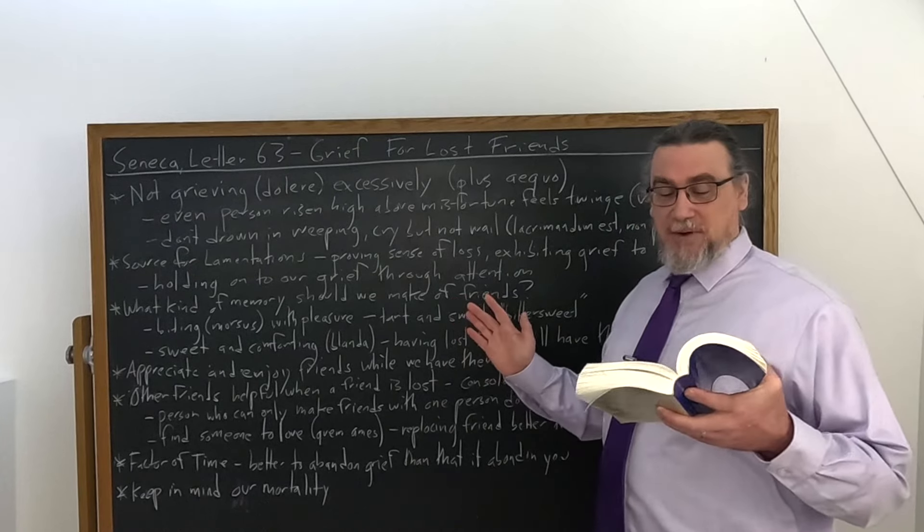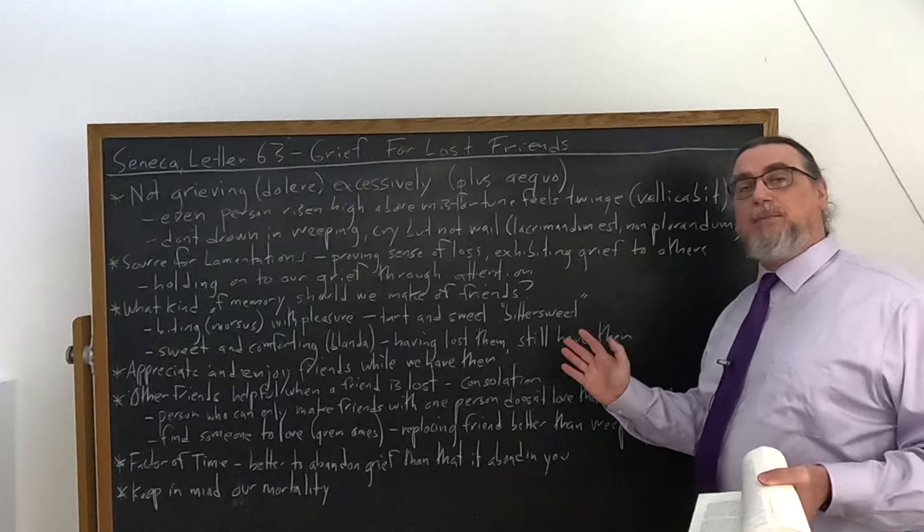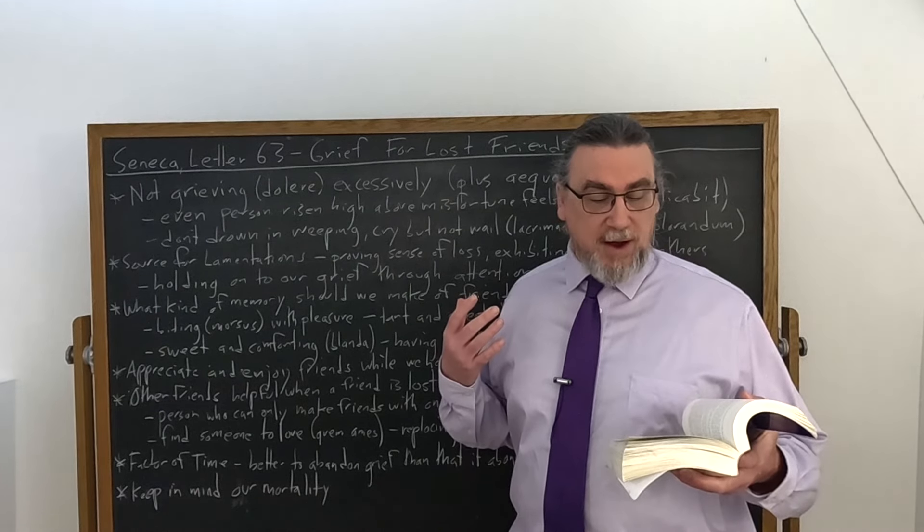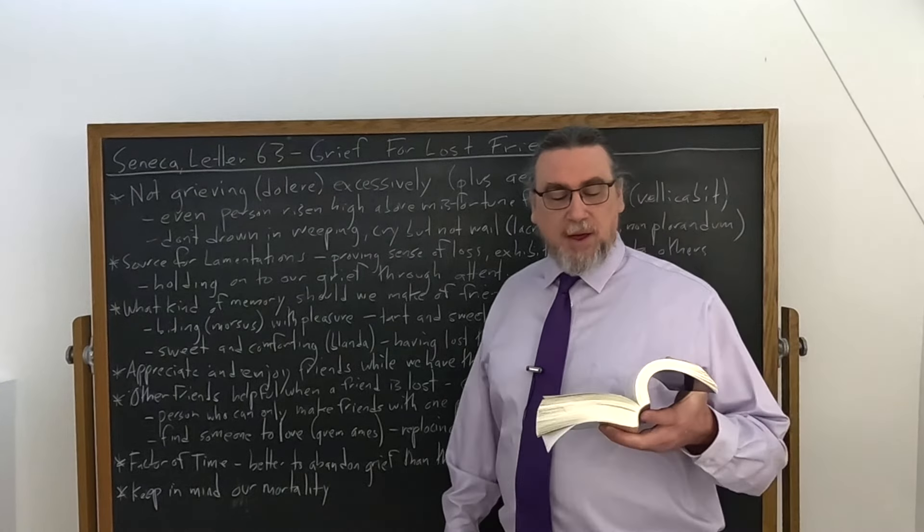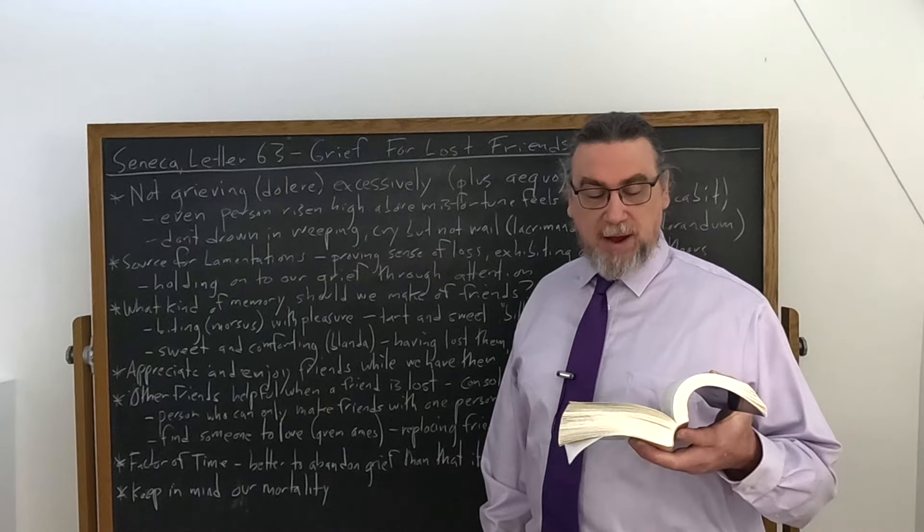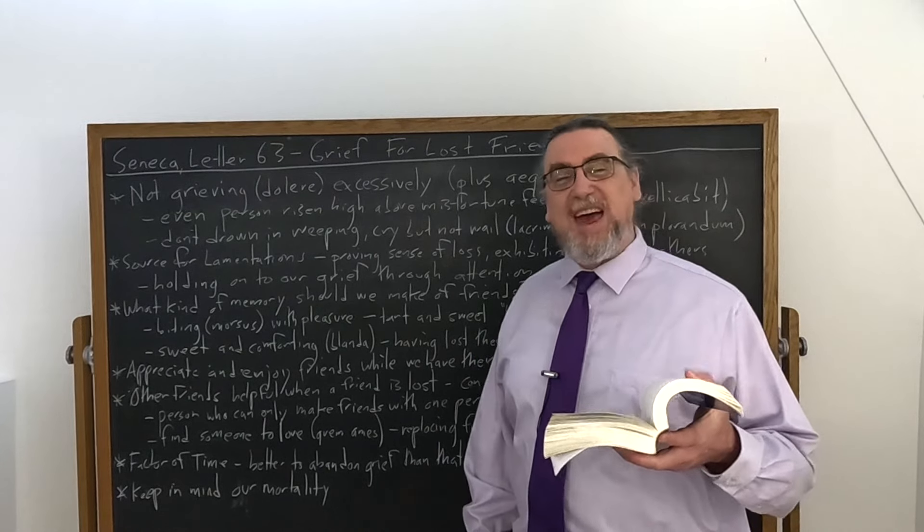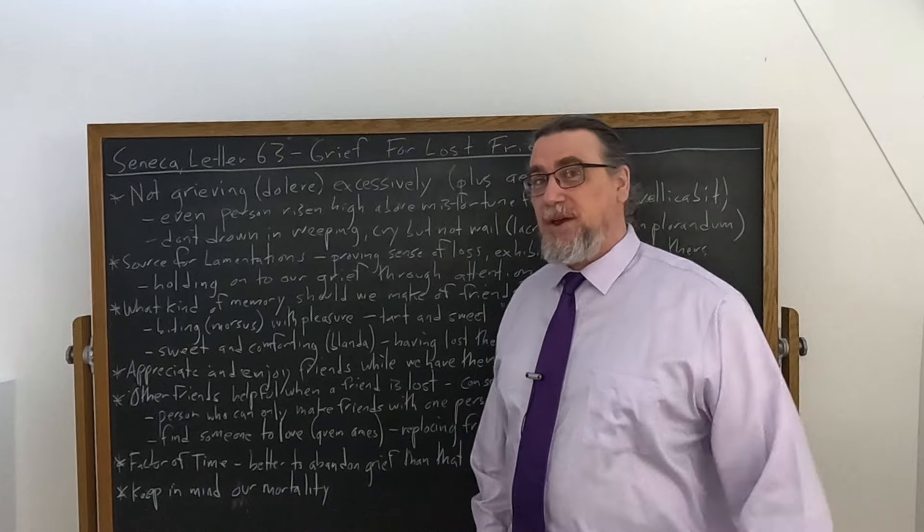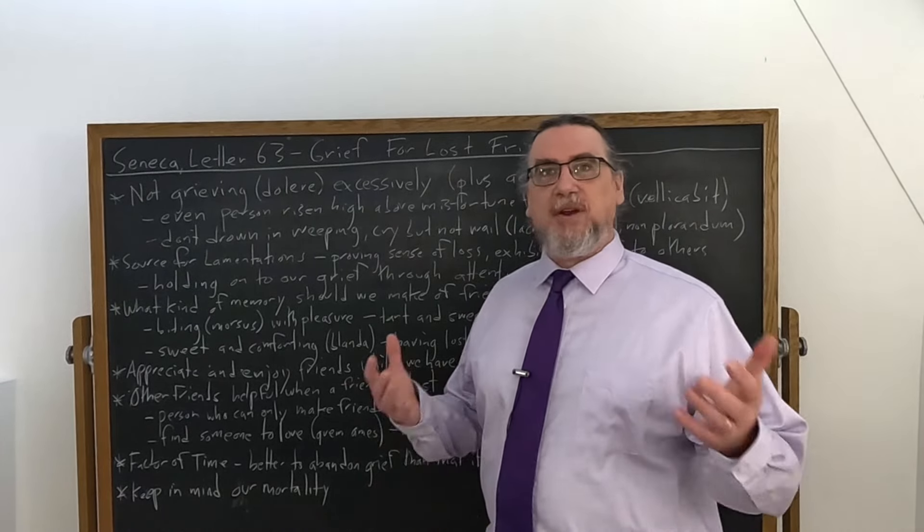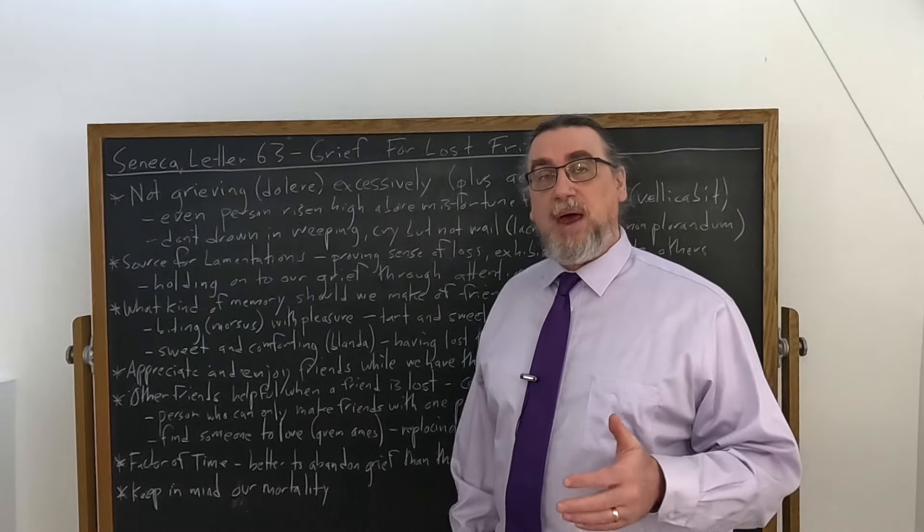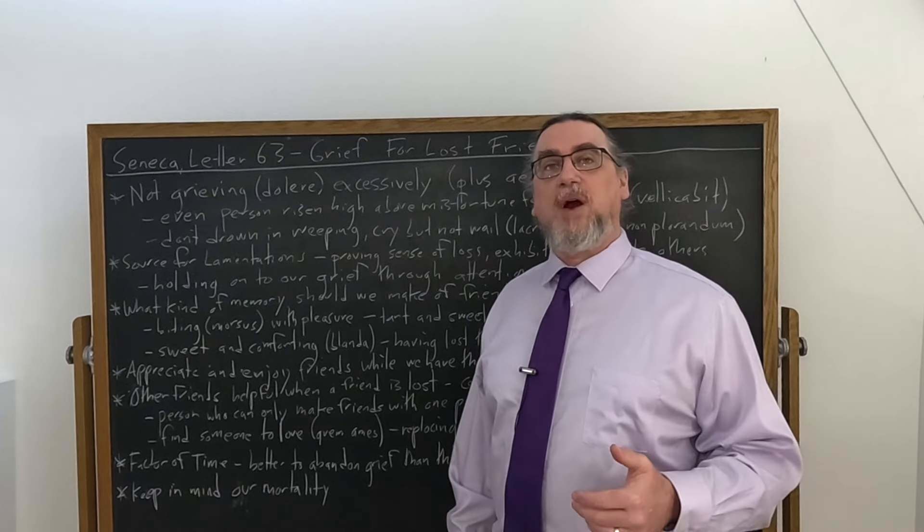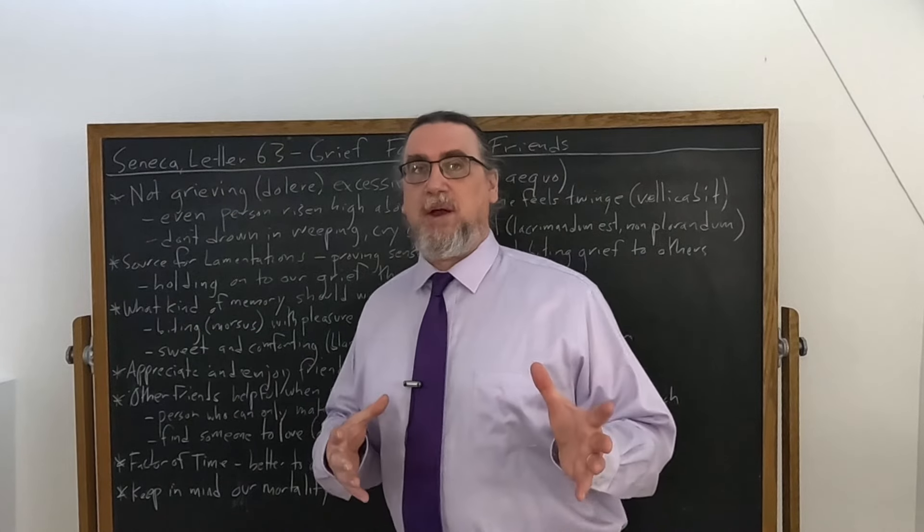He also has some advice that you might not like to hear. You may have gone along with this. He talks about other friends being very useful or helpful when a friend is lost. They can provide you with consolation during the grief. Perhaps they can even grieve with you because they also lost a friend in that. And he says, if we have no other friends, we're doing a worse injury to ourselves than fortune has done to us. Fortune took one person from us. We are taking from ourselves every person we don't make our friend. And then he says, anyone who cannot make friends with more than one person does not love that one even very much. So, he's not talking about people who are discriminated against or never given a chance or become refugees and never have the opportunity to form attachments to many people or any other circumstances like that. He's talking about people who live a regular life, but don't form friendships with more than one person.